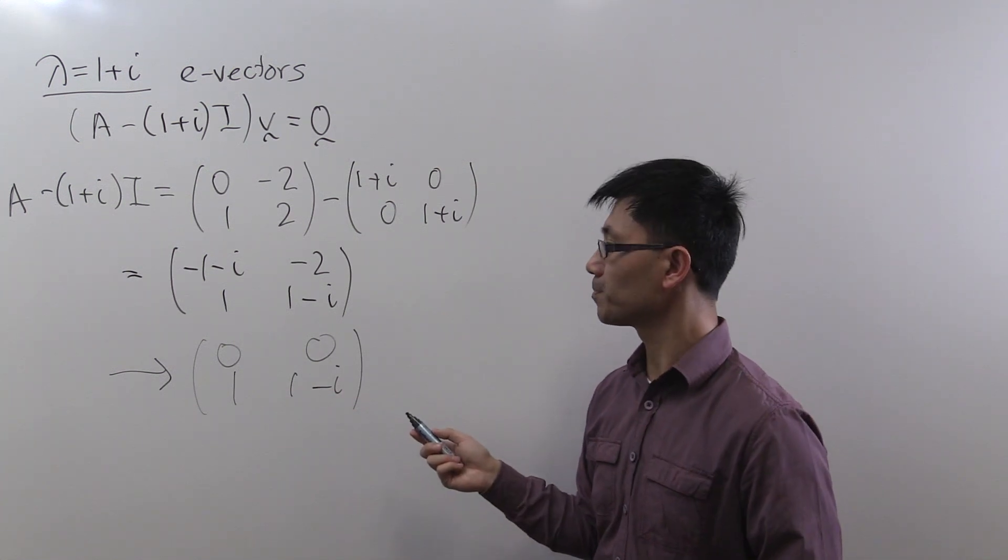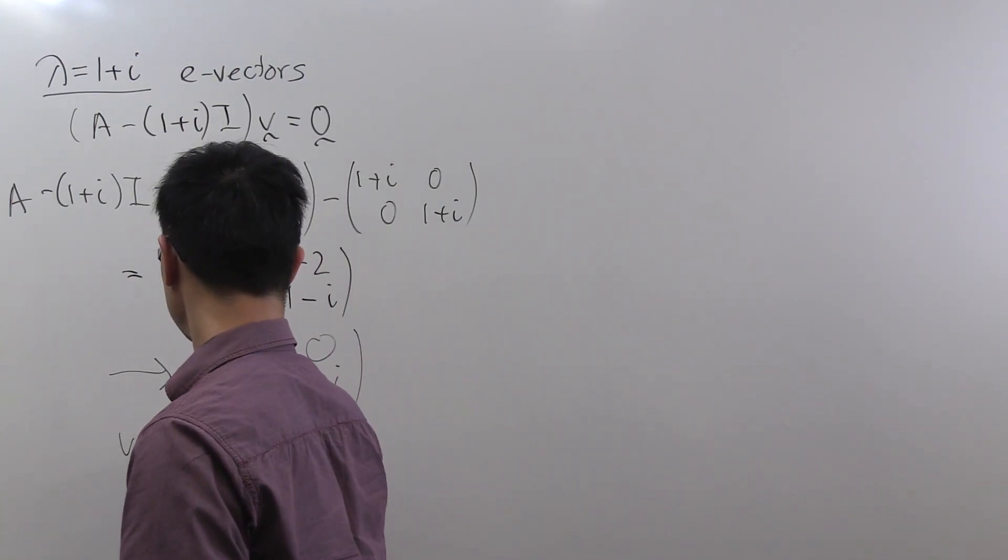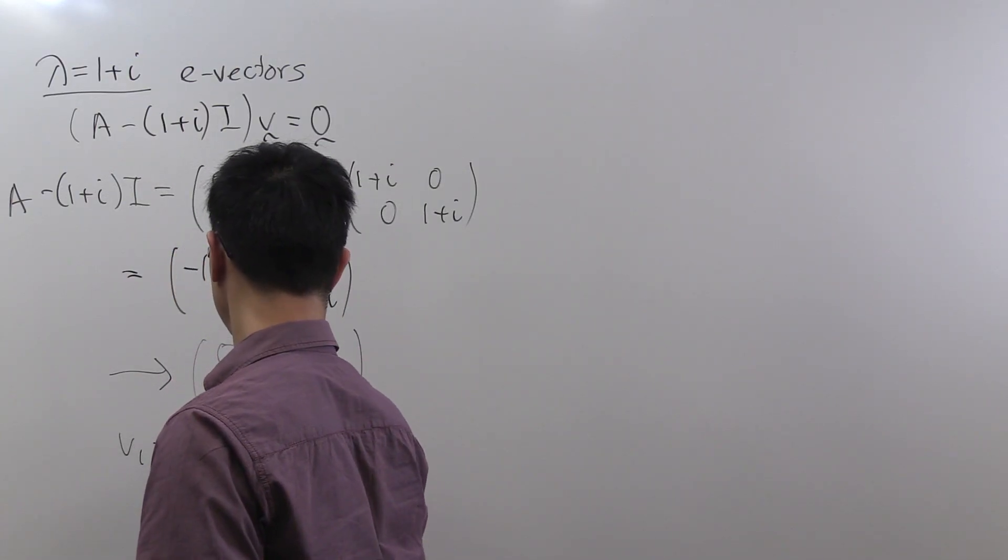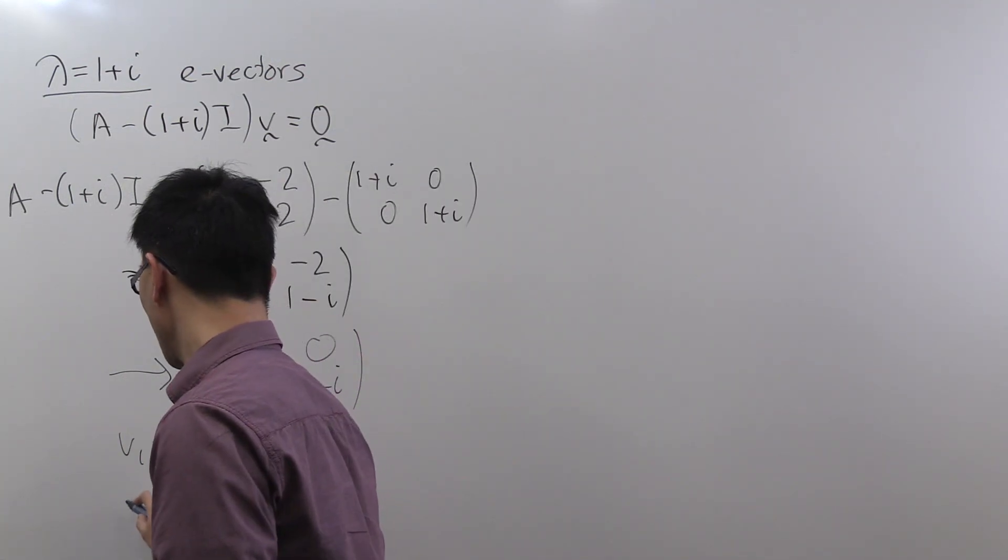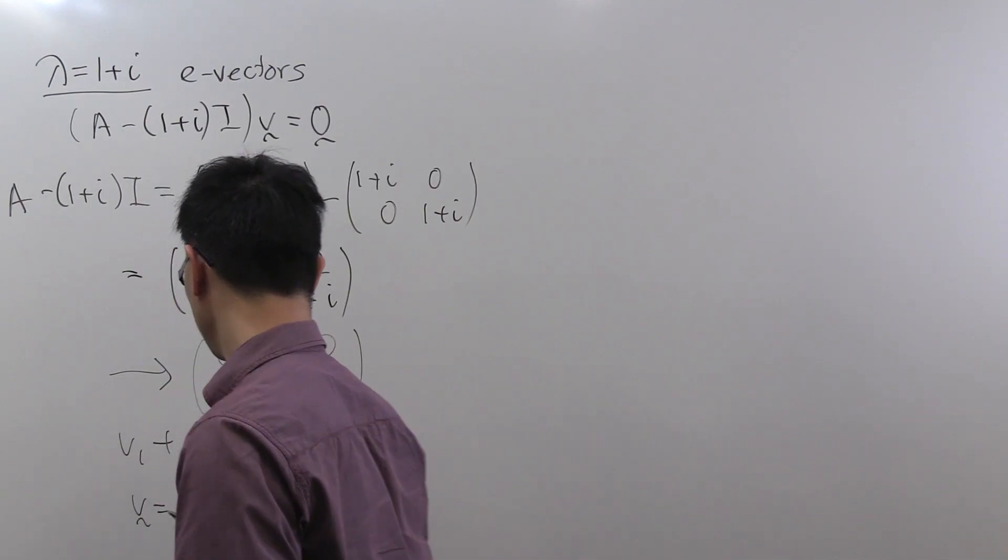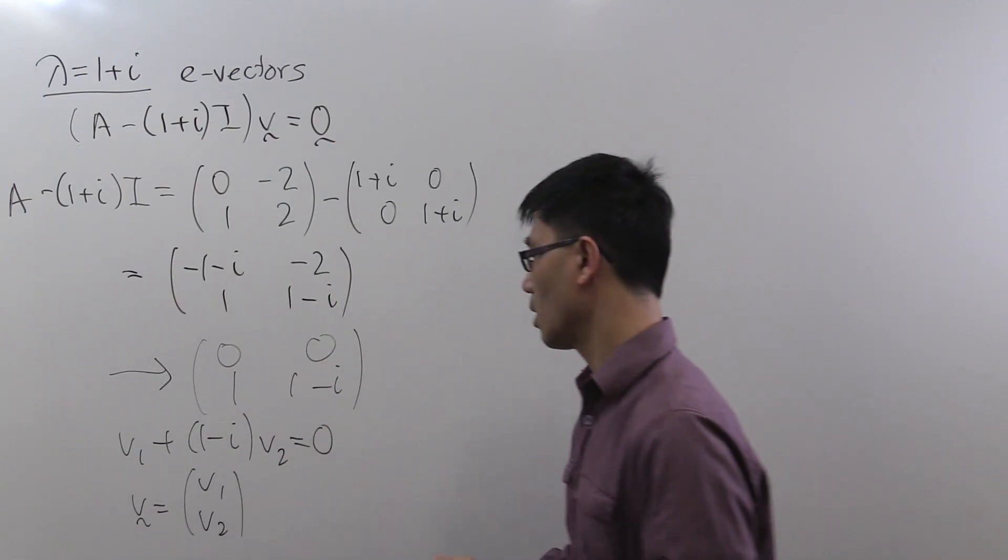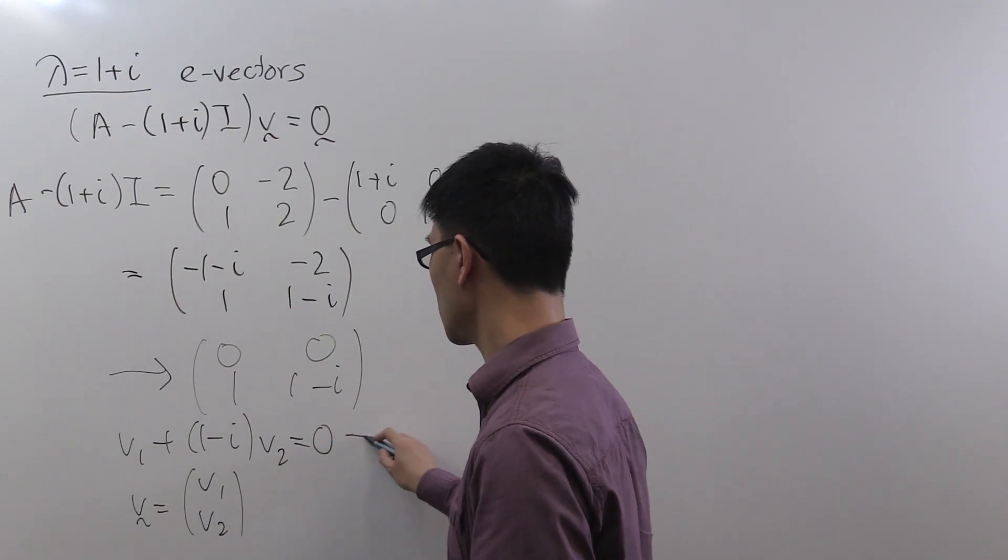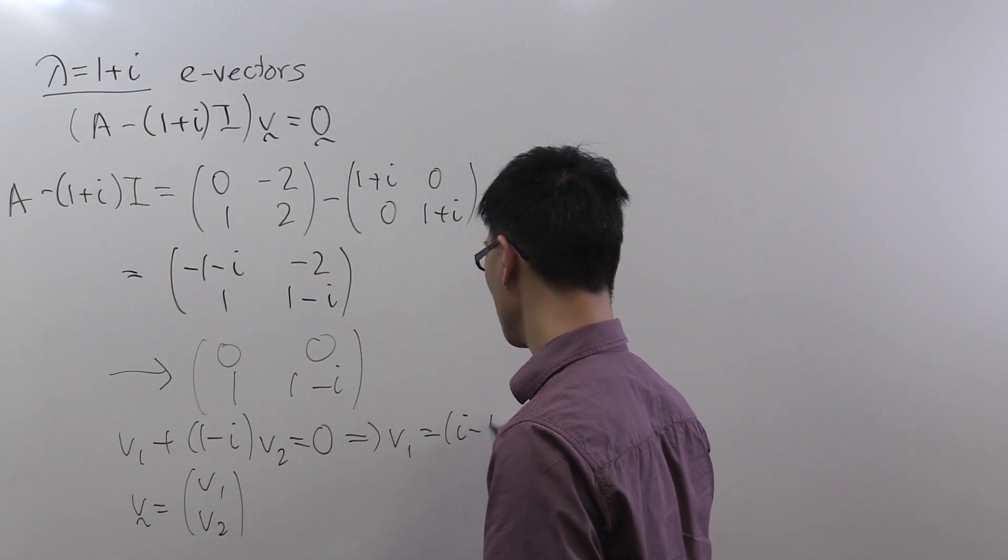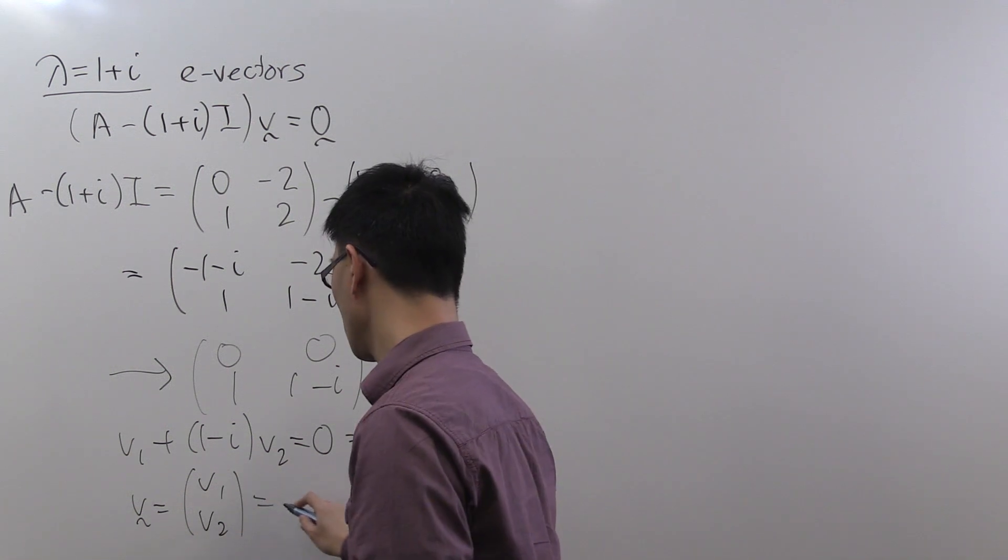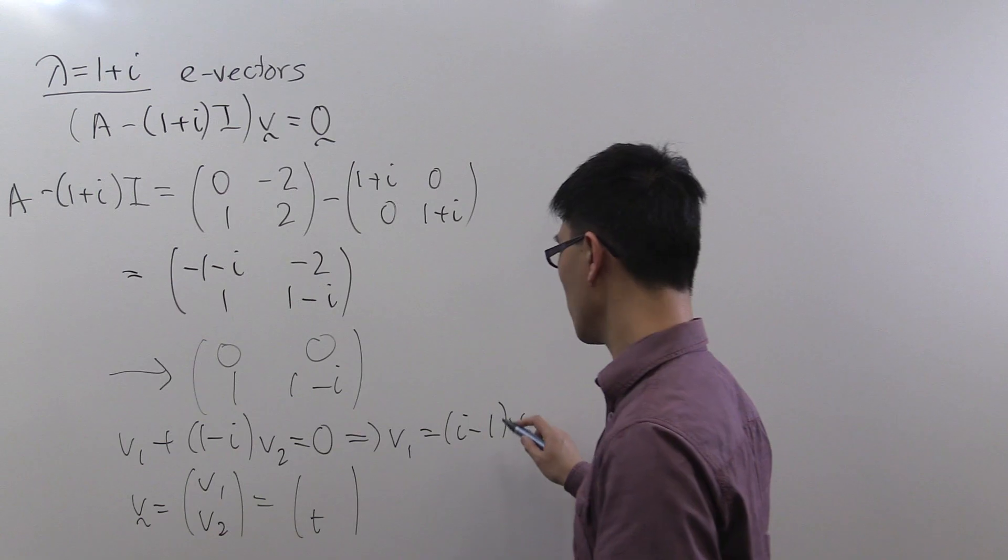So now we can solve this equation. It corresponds to a single equation. So v1 plus 1 minus i times v2 equals 0. So the set of solutions is given by v equals (v1, v2). And this implies that v1 equals the negative of this term here, so it's i minus 1 times v2. So whatever we have for v2, we need to have i minus 1 times that for v1.